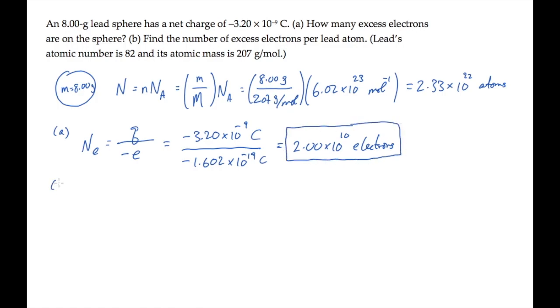Part B asks us for the number of excess electrons per lead atom. Call that n sub little a, and it equals the number of excess electrons divided by the number of atoms that we calculated earlier. That works out to 8.58 times 10 to the minus 13 electrons per atom.